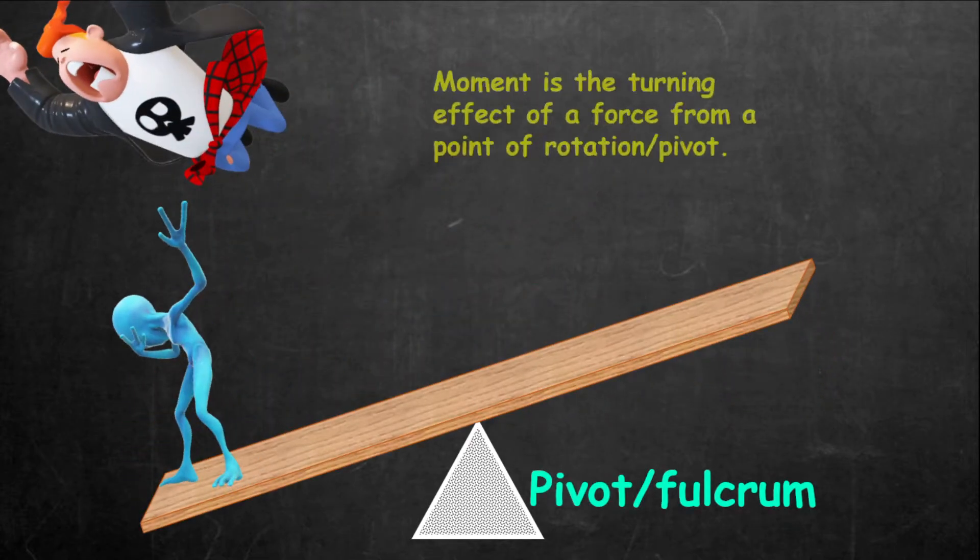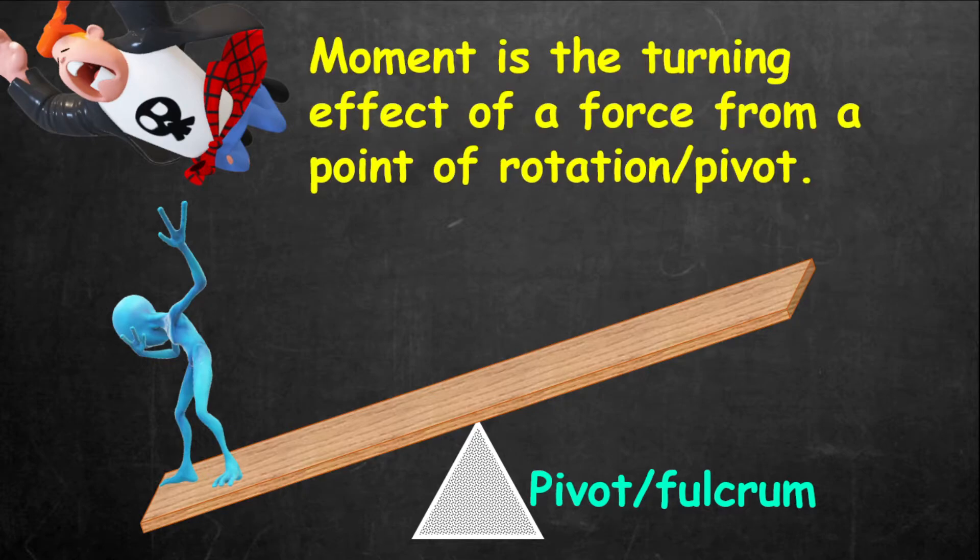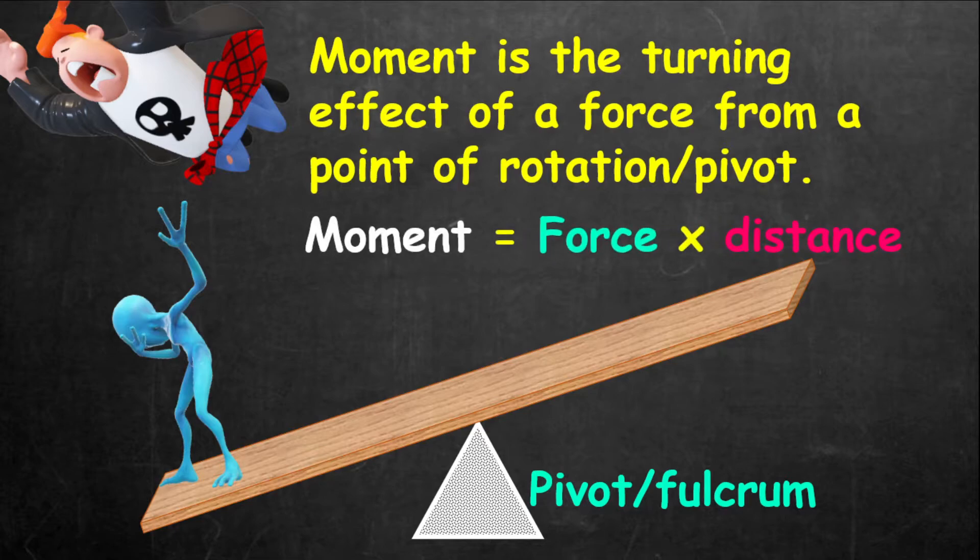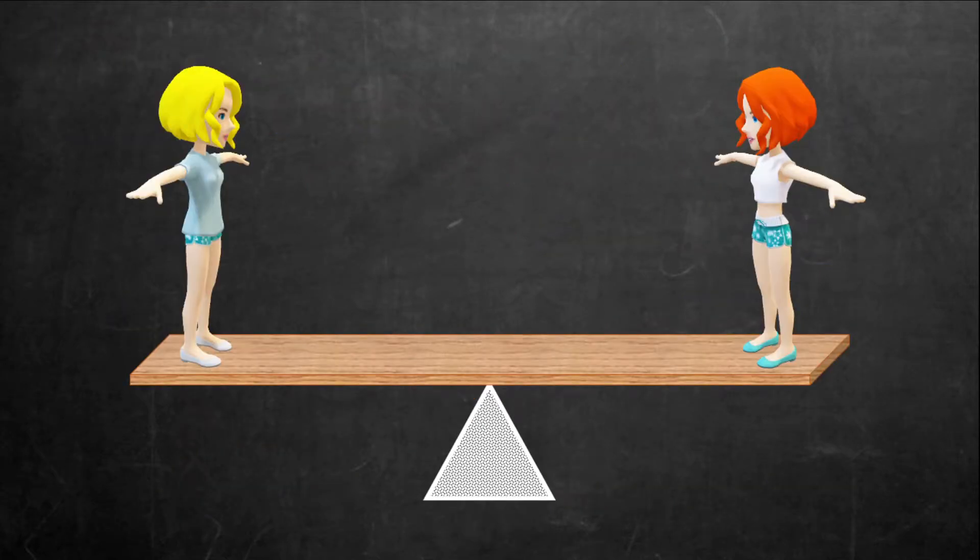Now, moment of force is defined as the turning effect of a force from a point of rotation or the pivot, otherwise called the fulcrum. So, moment of force is given as the product of force and distance. In other words, it is force multiplied by distance.